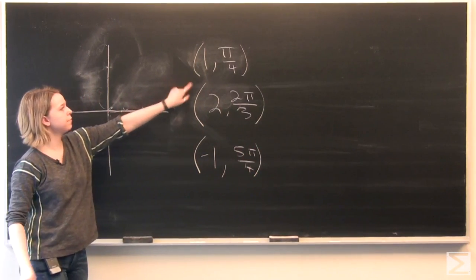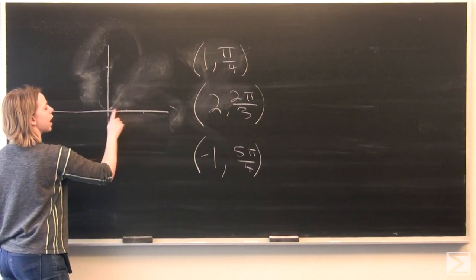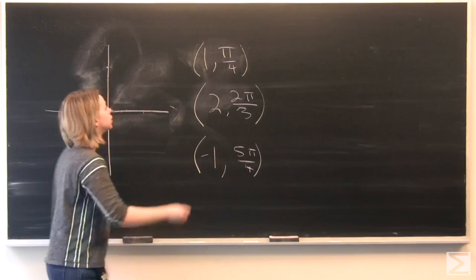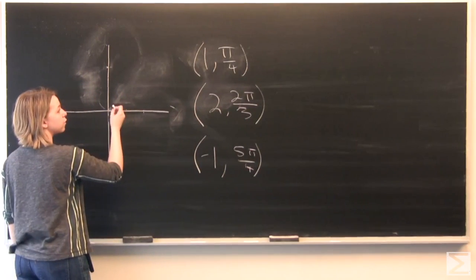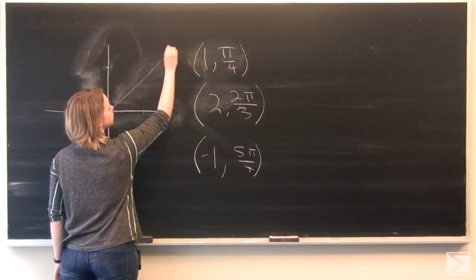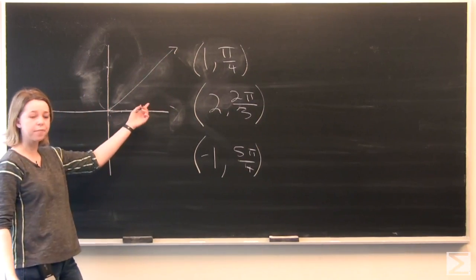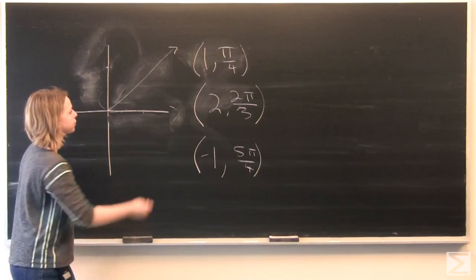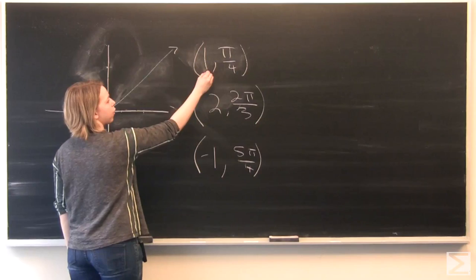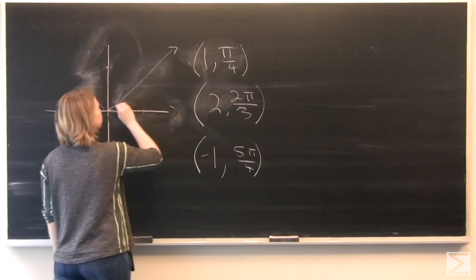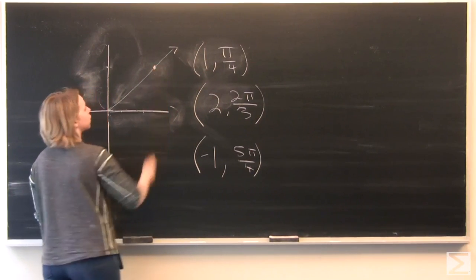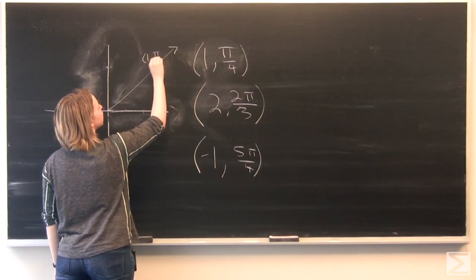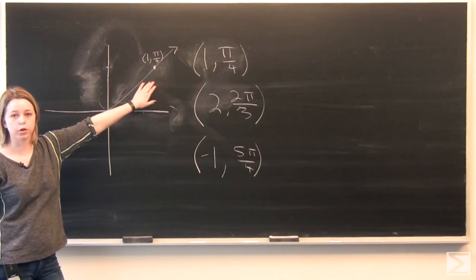For the first one, we're going to move our angle first. Our angle pi over 4 radians is going to be along this ray. This is pi over 4 radians from the origin of our plane. And for our other coordinate, 1, we are moving 1 unit from the origin. This is our point 1 pi over 4 in a polar graph.